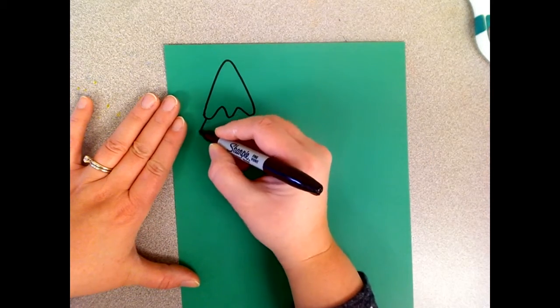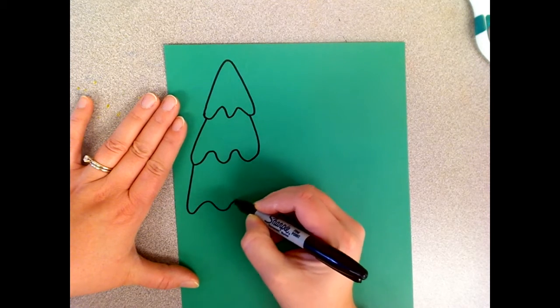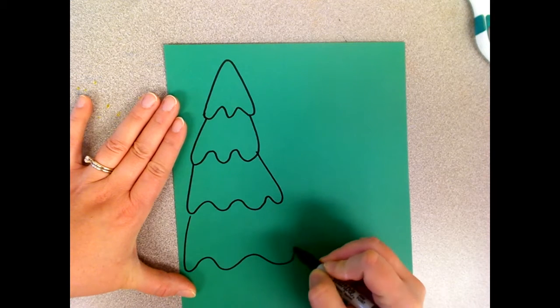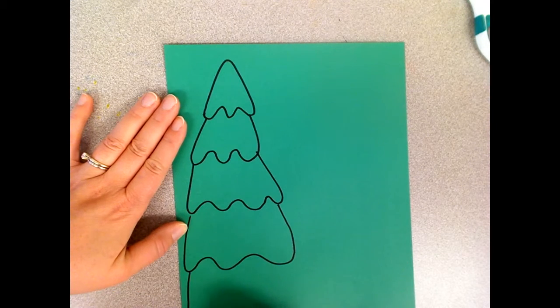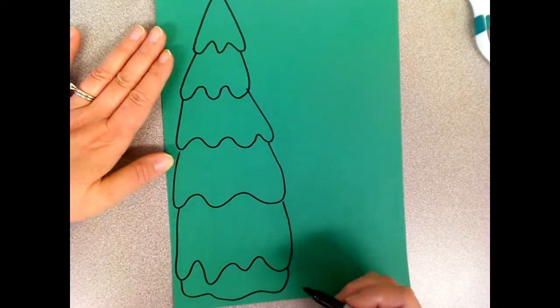First start off by drawing what kind of looks like a ghost for the top of your tree and then add bigger sections as you go, making bigger and bigger ghosts for each section of your tree. Make four or five for your big tree.